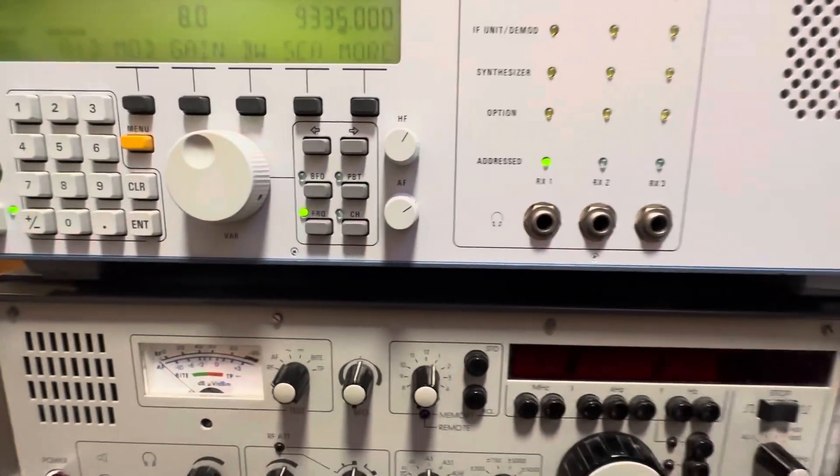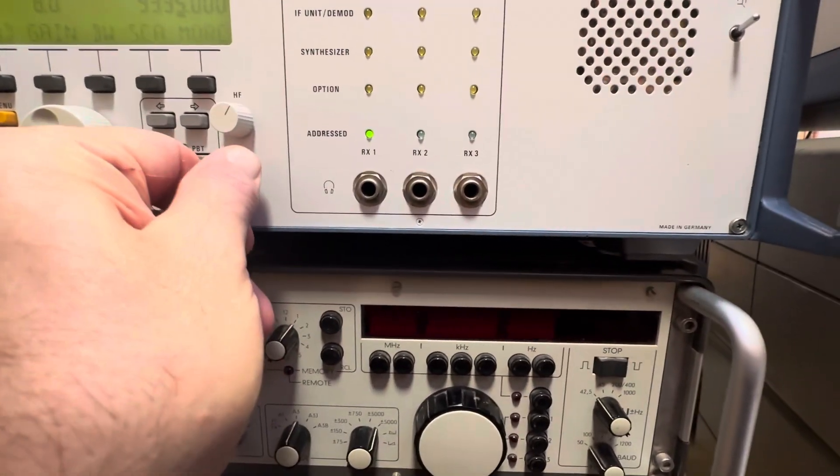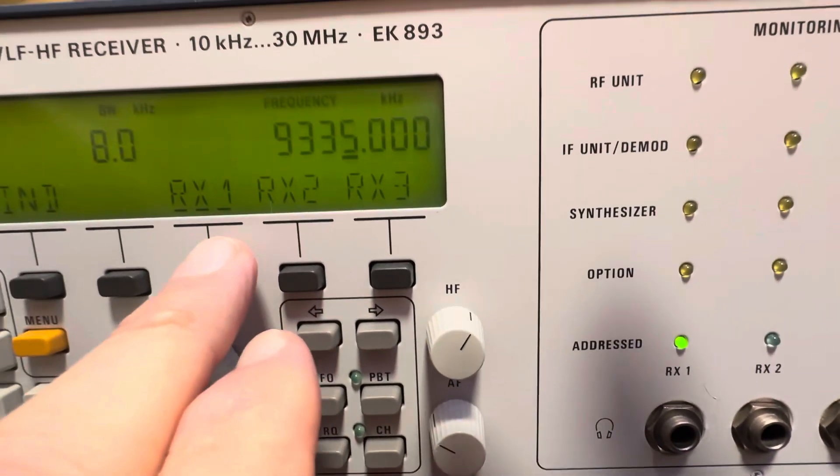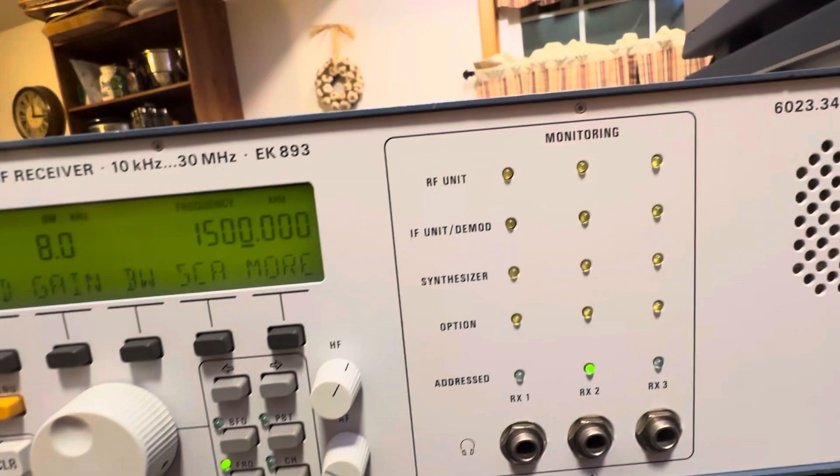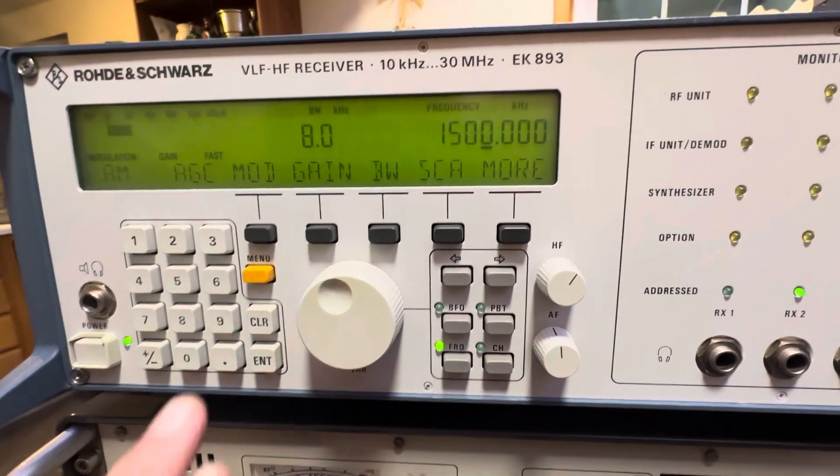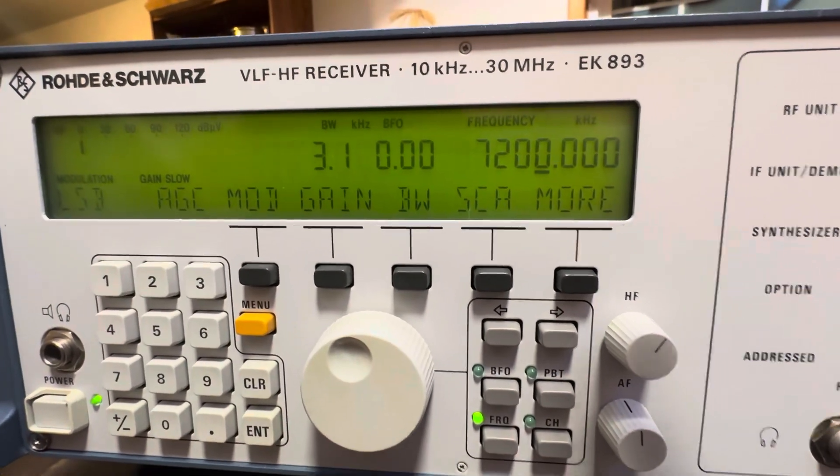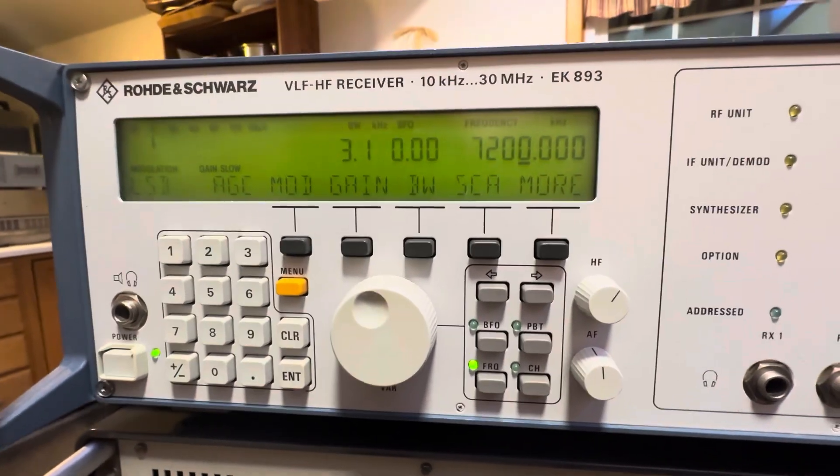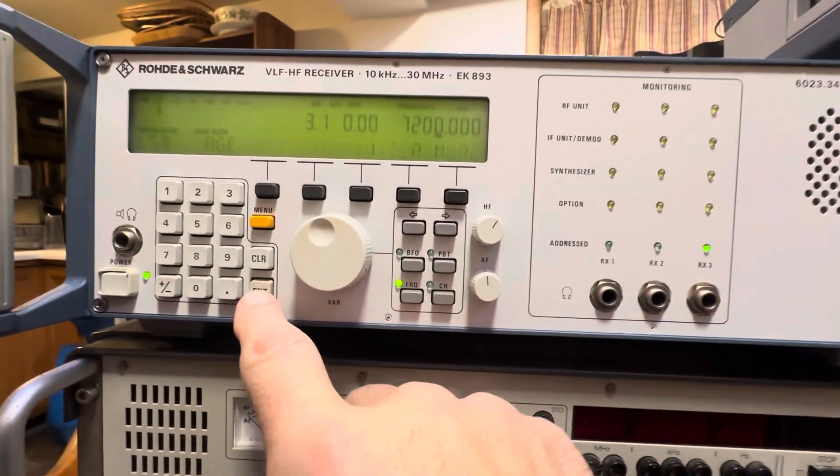As you see, we're on receiver 1. I'm going to go to receiver 2, and that's an AM station, WTOP in Washington. I'm going to go to receiver 3, and that's 7200 ham channel, which was pretty active a second ago before I started doing this. But you can do a lot of things with these. Let's go back to receiver 1.